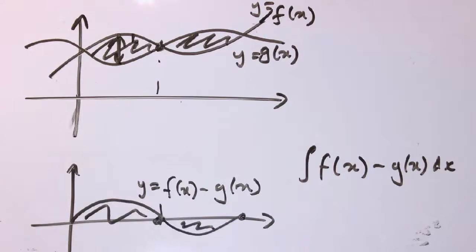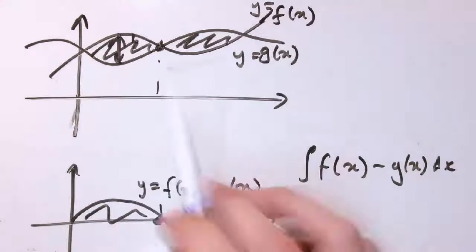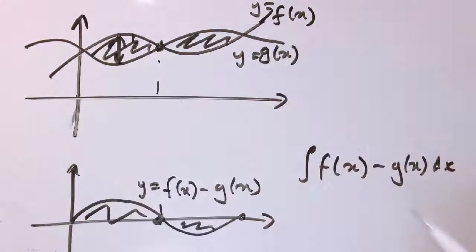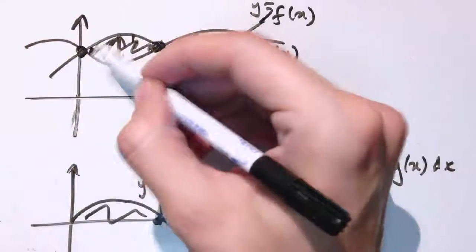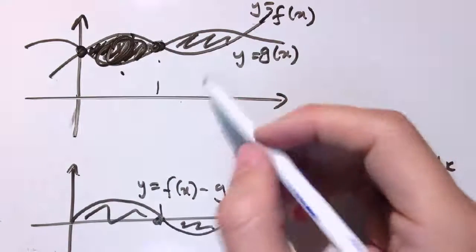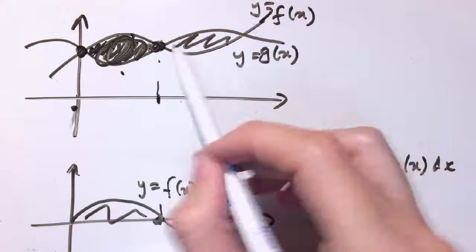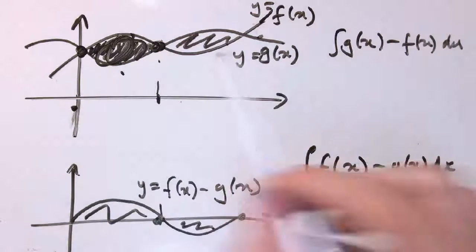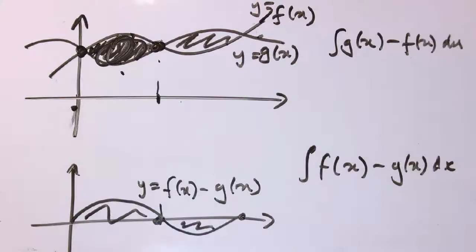But it could come up, and in general as you go further it's something you've got to watch out for. That rule about taking the top function minus the bottom function is always okay as long as you're looking at one segment. So to work this out you'd do f(x) minus g(x) over the first segment, and then for the second segment do g(x) minus f(x) between those limits — because g is above f there, giving a positive answer — and then add the two parts together.